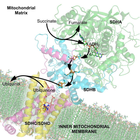A computational method, IPRO, recently predicted mutations that experimentally switched the cofactor specificity of Candida boidinii xylose reductase from NADPH to NADH.